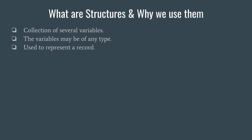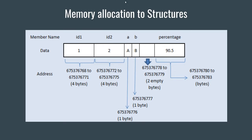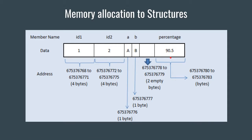Now let's look at memory allocation for structures. Structures are allocated memory as per the members contained inside them. For example, if you have two integers id1 and id2, both occupy four bytes each since an integer is four bytes. Similarly, two characters occupy one byte each, and a float variable occupies four bytes. In most places you'll find it written that the size of a structure equals the total size of all its member variables, but that is not always true.